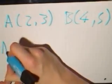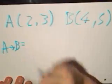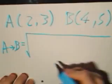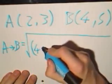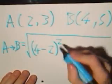So, simple equation. Distance from A to B is equal to the square root of, open brackets, 4 minus 2 squared. You must always remember the squared.